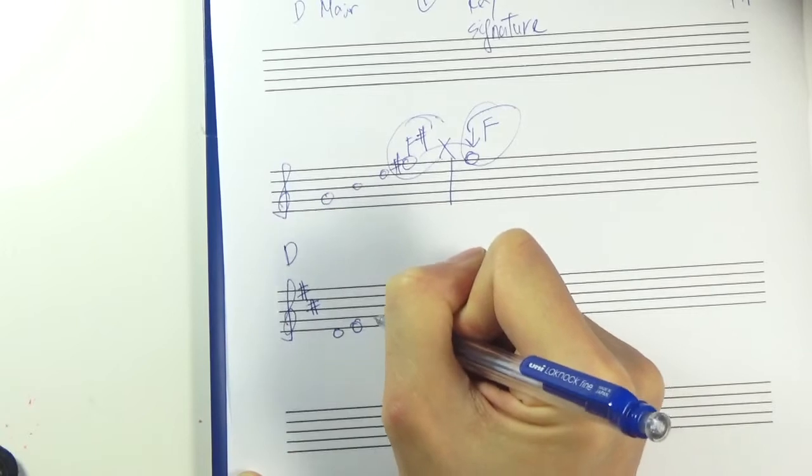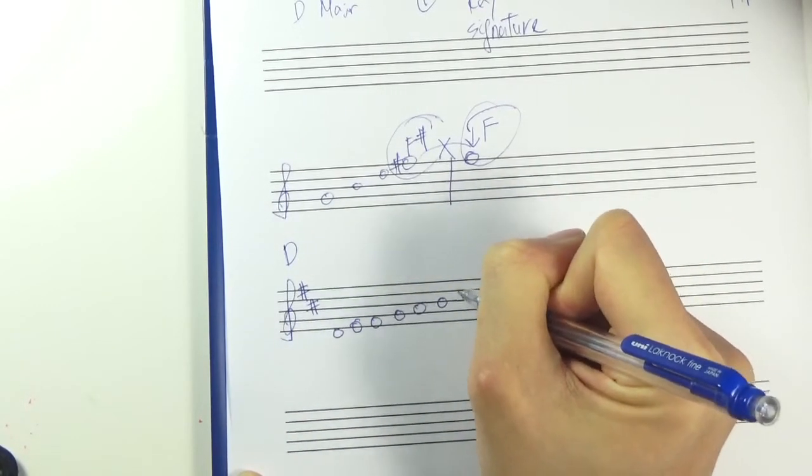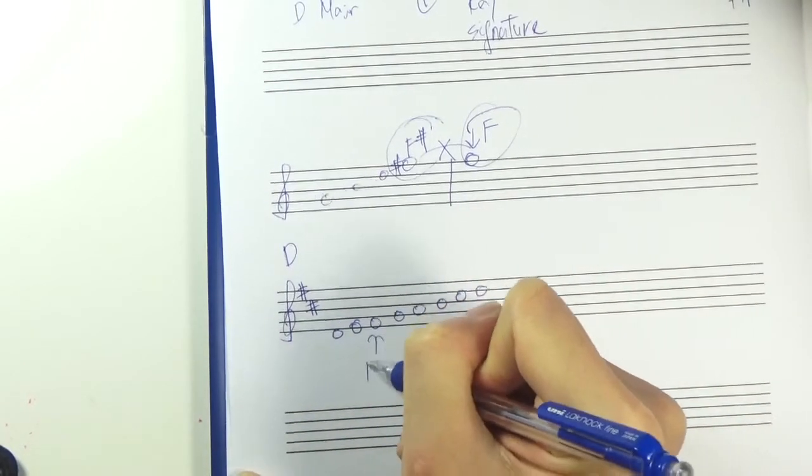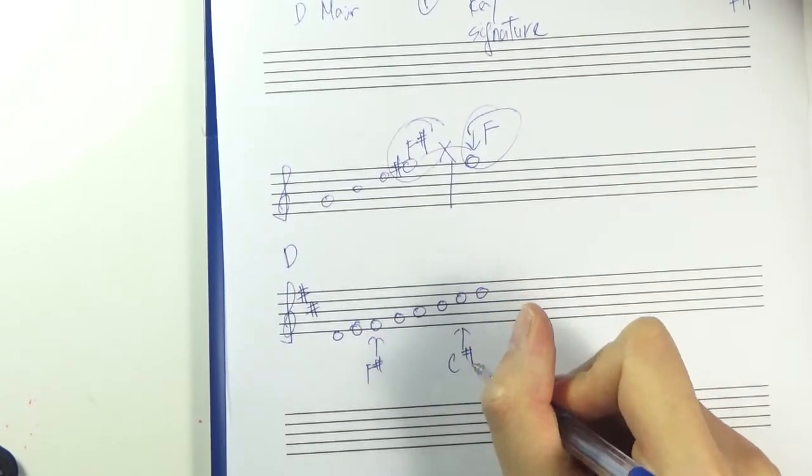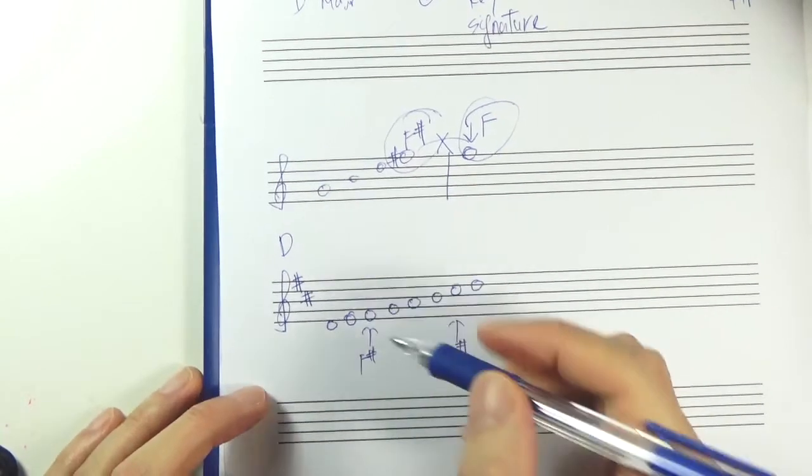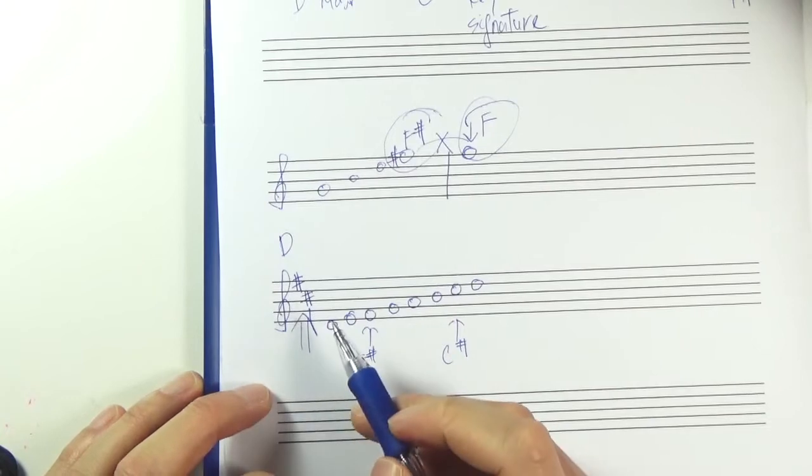D, E, F, G, A, B, C sharp, D. So these two are actually F sharp and C sharp. Without being explicitly written as F sharp and C sharp. Since it's already indicated in the key signature.